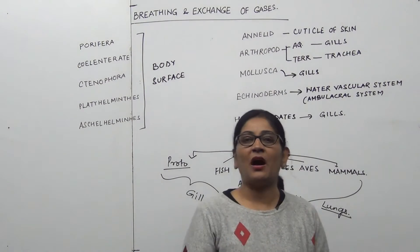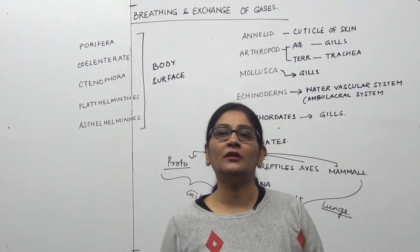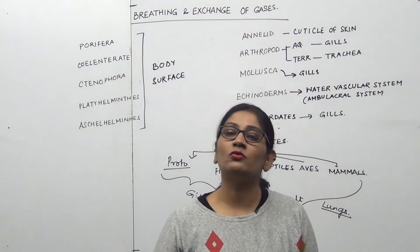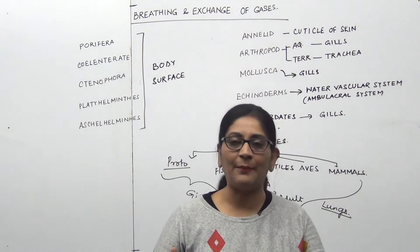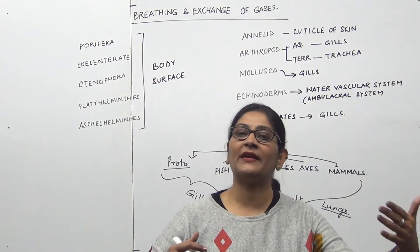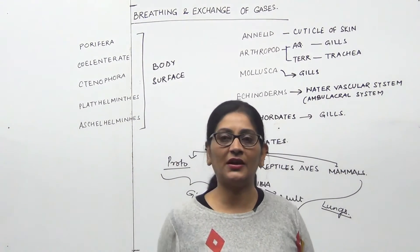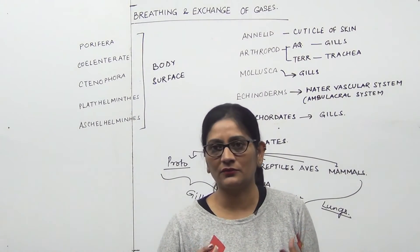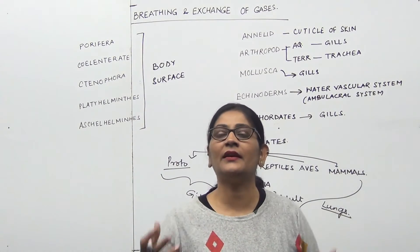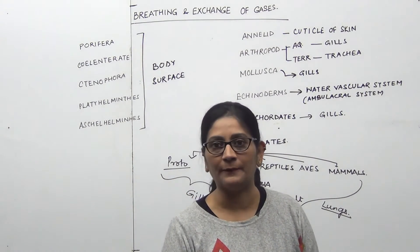Next we have Arthropoda. The respiratory organ in arthropods depends on their habitat. Aquatic arthropods have gills, while terrestrial arthropods have trachea or book lungs as their respiratory organs.